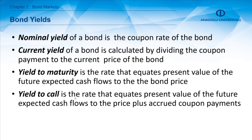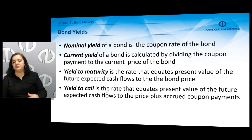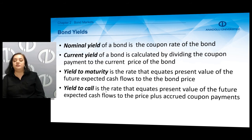There are some different definitions of bond yields. The nominal yield of a bond is the coupon rate of the bond. The current yield of a bond is calculated by dividing the coupon payment by the current price of the bond. The price of the bond may be different from the nominal or par value, so we divide the coupon payment by the price of the bond to find the current yield.